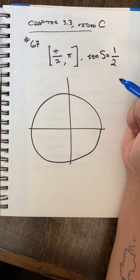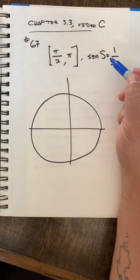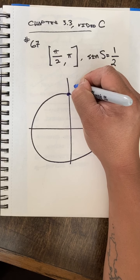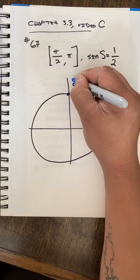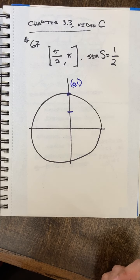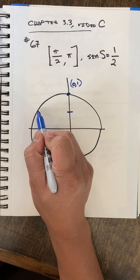I'll find out where sine is one half. This is the point zero one. One half is right about here, halfway up, and that happens